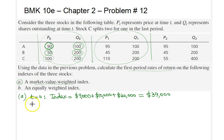Now at time 1, let's see what happens to the value of our index. We have $95 times 100 shares for a total of $9,500, plus 200 shares each priced at $45 for a total of $9,000, and finally 200 shares priced at $110 each for a total of $22,000. This sum would now be $40,500.